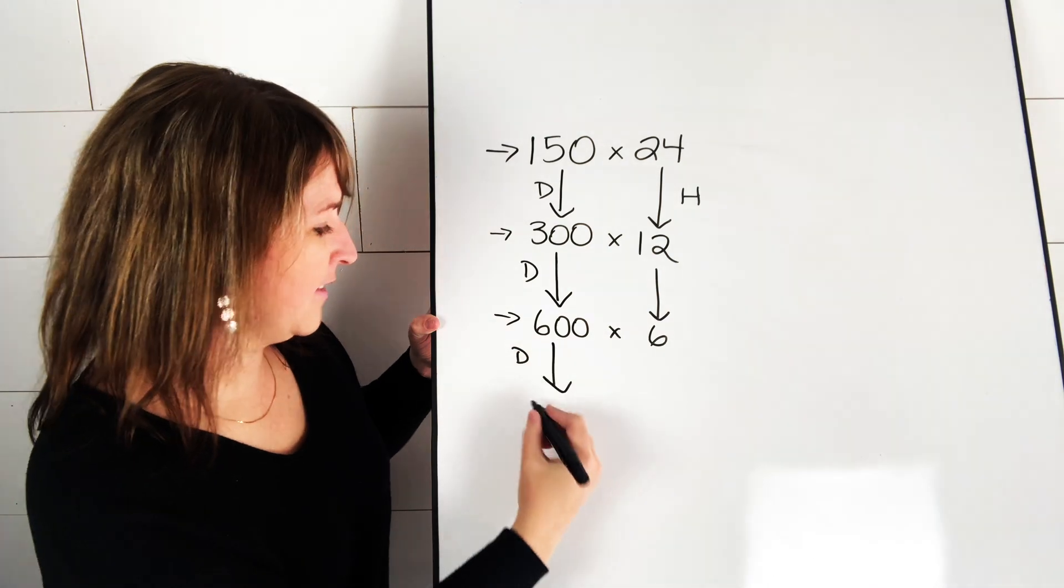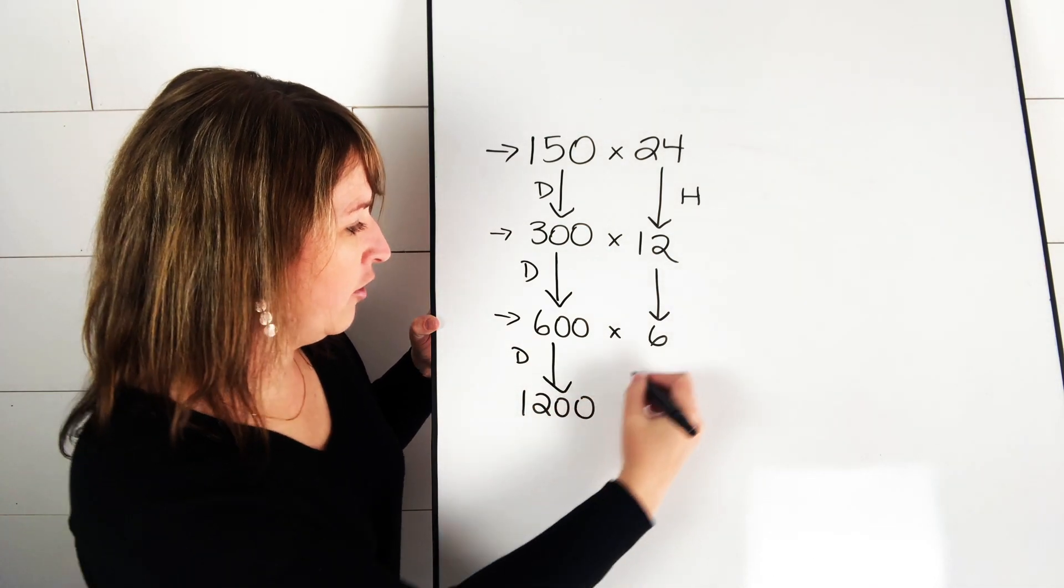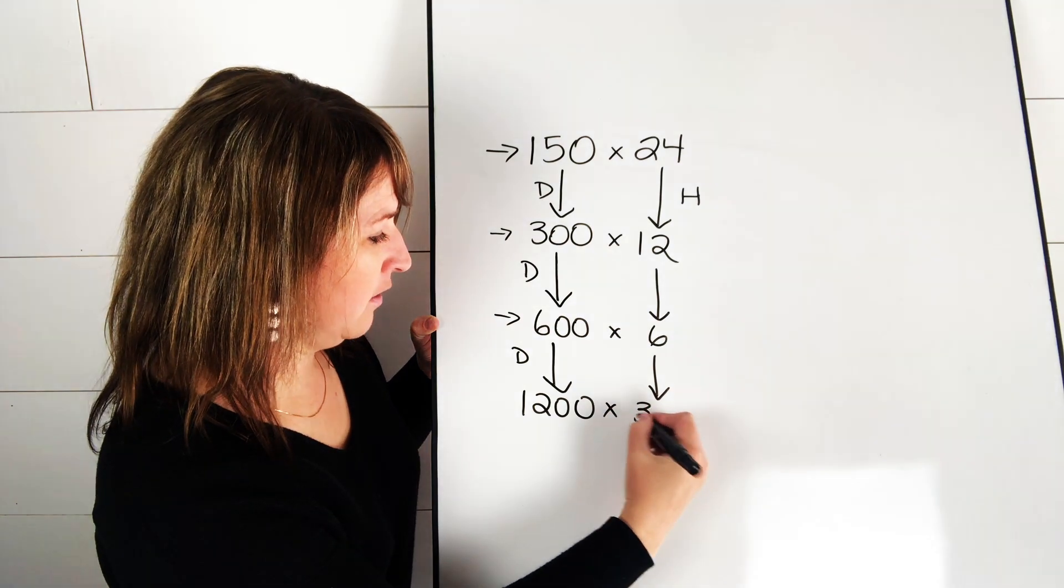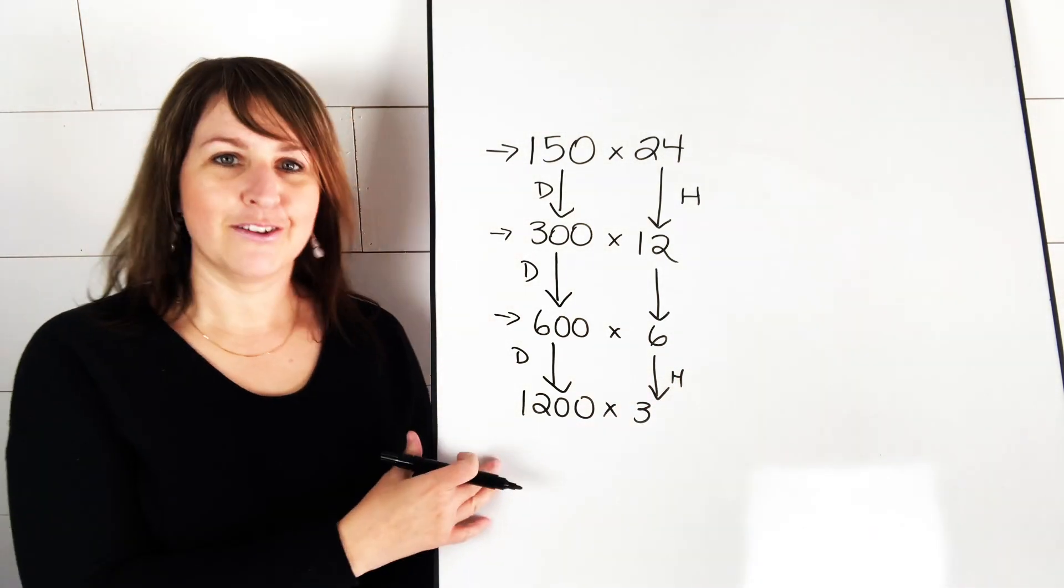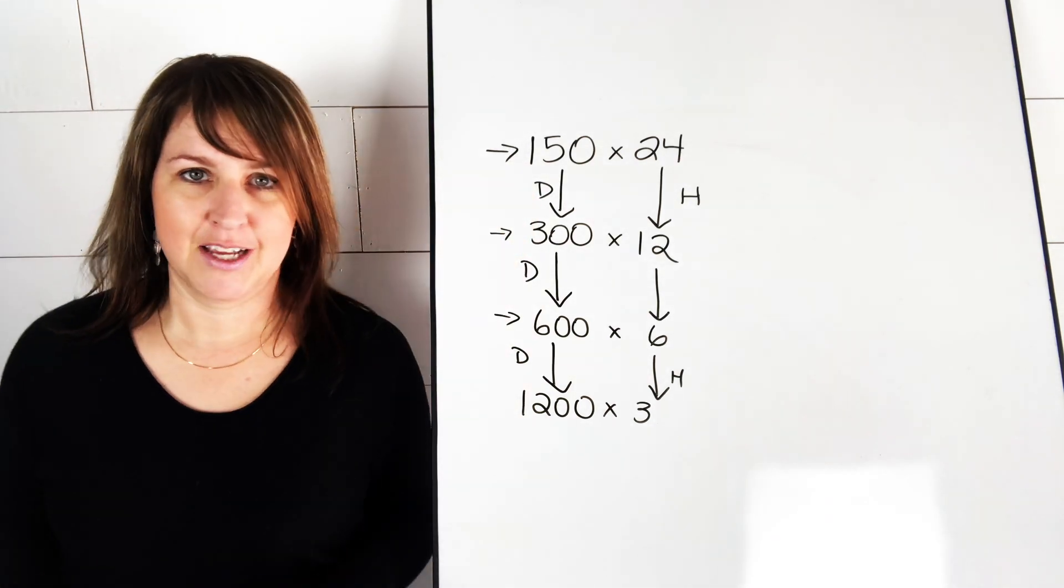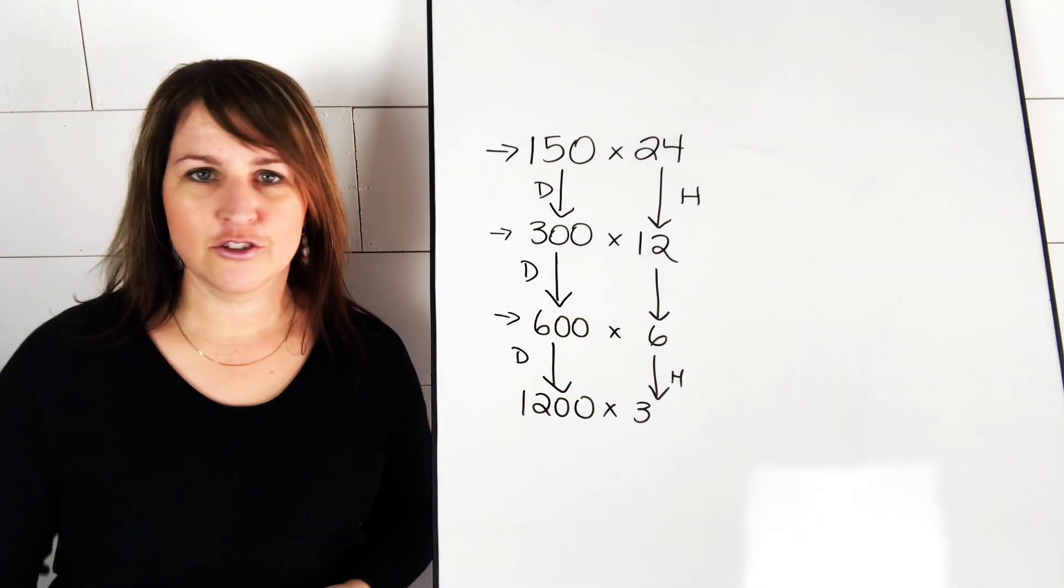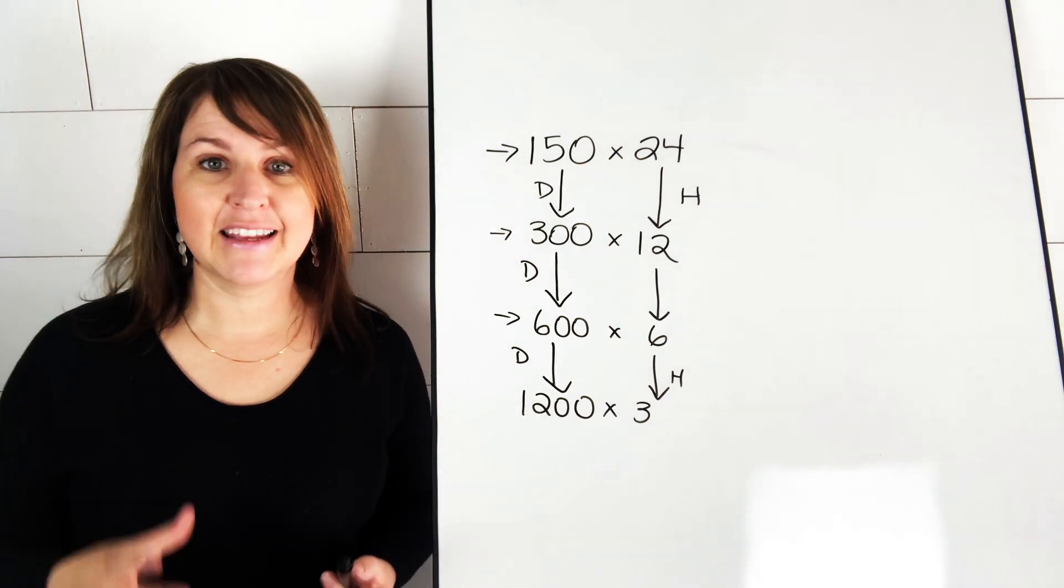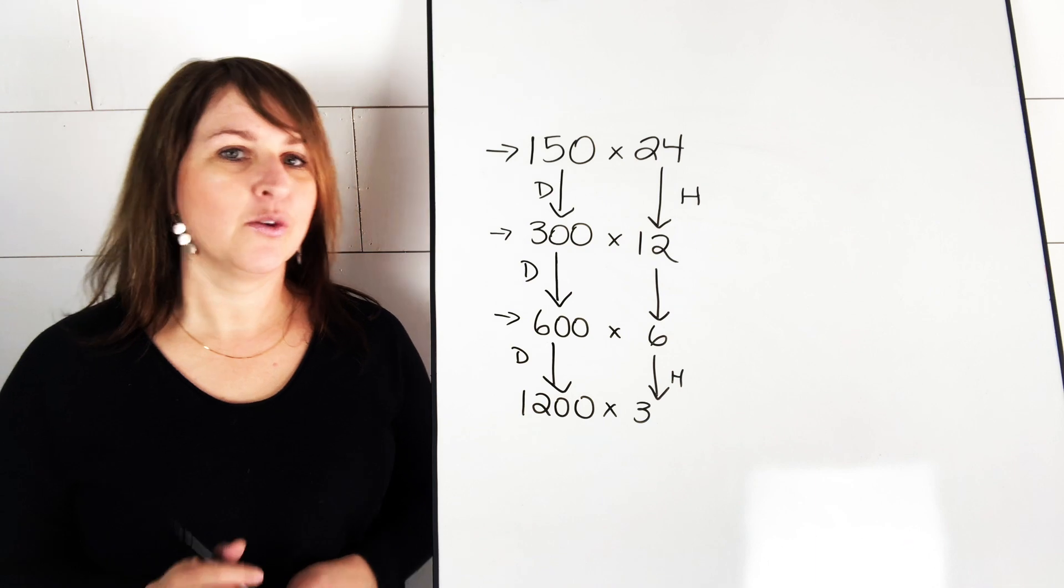So we'll double the 600 to make 1,200. And we'll half the 6 to make 3. So again, 1,200 times 3 is easier to solve than 150 times 24. So this is just one strategy. There are other things that you could do definitely to figure that out. But doubling and halving is one strategy that works for multiplication.